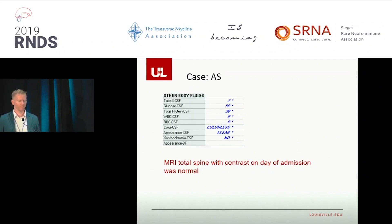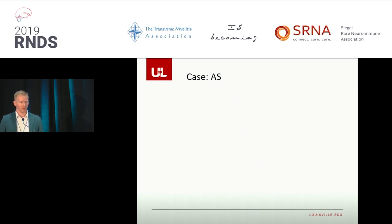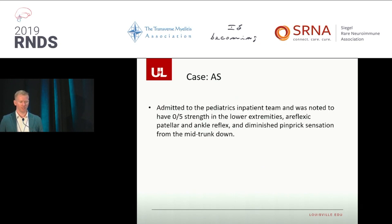The team that initially saw her did a workup. They thought this sounds like something inflammatory, and they did a spinal tap. The initial spinal fluid results showed normal glucose and protein, with no white blood cells — no signs of inflammation. She also had an MRI of her spine performed, and this was normal, just two days after onset of symptoms. The team found she had zero out of five strength in her lower extremities, was areflexic, and had decreased sensation when poked with a pin from the mid-trunk down.